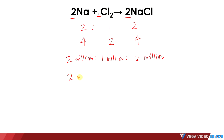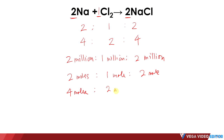What if I have 2 moles of Na? How many moles of Cl₂ do I need? That's 1 mole — it's half of the Na number — and then it can produce 2 moles of NaCl. And if I have 4 moles of Na, how many moles of Cl₂ do I need? The amount of Cl₂ is always half of Na, so the half of 4 moles is 2 moles of Cl₂, and it can produce 4 moles of NaCl. These numbers are based on the original ratio in the balanced chemical equation.